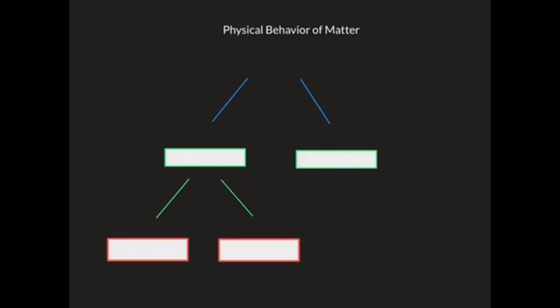Matter can be divided into two categories starting off by its substances and mixtures. A substance is a matter that has definite properties and composition. A substance can be split up into elements and compounds.